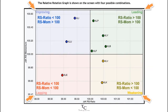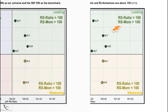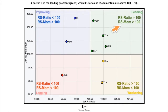The relative rotation graph is shown above with four possible combinations. Using the nine sector SPDRs as our universe and the S&P 500 as the benchmark: a sector is in the leading quadrant (green) when RS ratio and RS momentum are both above 100. A positive RS ratio indicates an uptrend in relative performance, and positive momentum means this trend is still pushing higher.